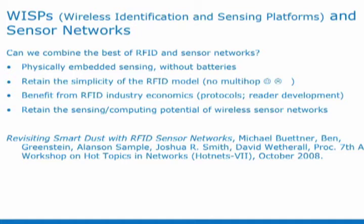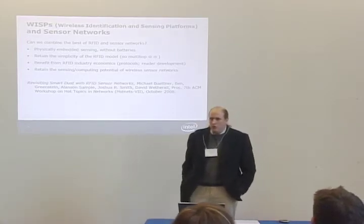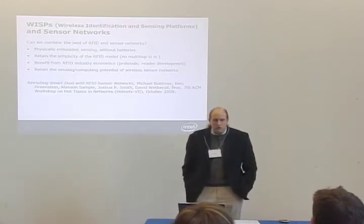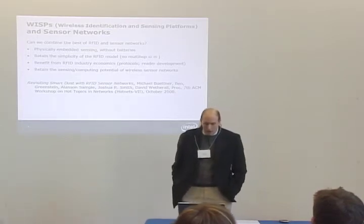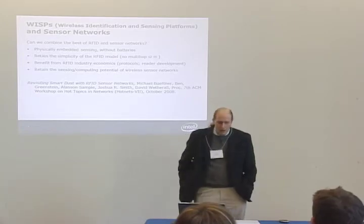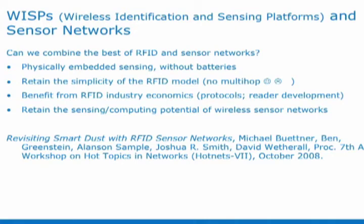WISP stands for Wireless Identification and Sensing Platform — 'identification' as in RFID, radio frequency identification. From a sensor networks perspective, the question is: can you combine the best features of RFID with desirable features of sensor networks? The goal is physically embedded sensing, similar to sensor networks, but eliminating batteries to get rid of the power problem. It would also be nice to retain the simplicity of the RFID model — for example, no multi-hop. Depending on your perspective, that's either good or bad, but that's the way RFID works: tags talk to readers, not to each other.